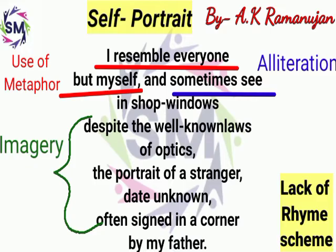It seems as if his self becomes irrelevant to him. One tends to see their own reflection in a mirror, which gets multiplied as we walk or look past many mirrors. The poet walks past various shop windows, but in spite of seeing his own reflection, he rather sees a portrait of a stranger.